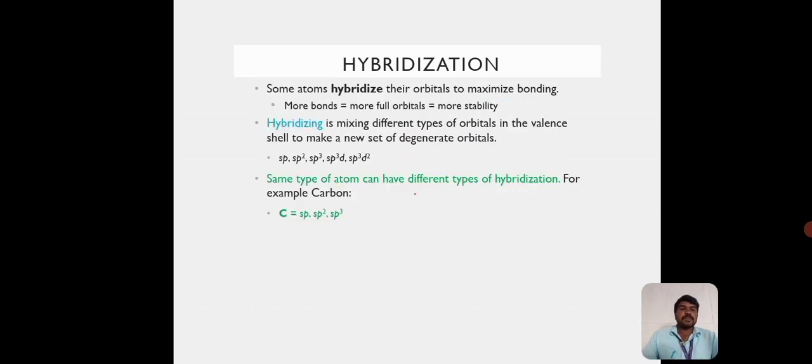Hybridization: Some atoms hybridize their orbitals to maximize the bonding. More bonds equals more filled orbitals equals more stability. Hybridization is mixing different types of orbitals in the valence shell to make a new set of degenerate orbitals.